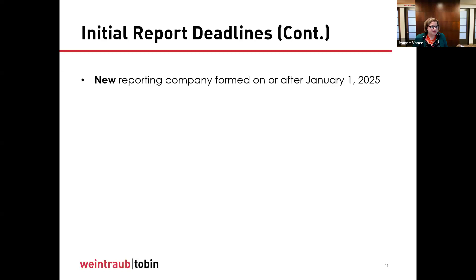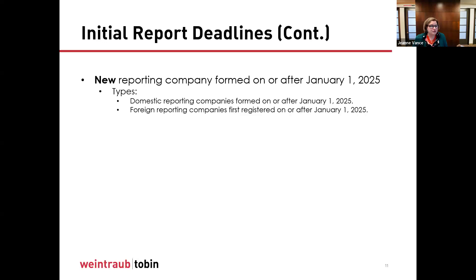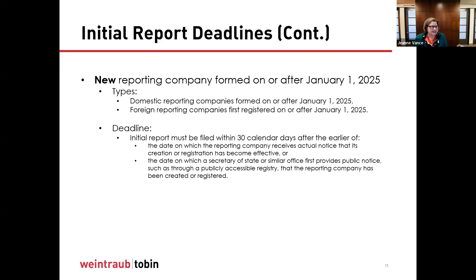If there is a new reporting company formed on or after January 1st, 2025, either foreign or domestic, the deadline is 30 days after the triggering date — when the company receives notice that it has been formed, or when public or personal information from the Secretary of State confirms that registration or formation has been accomplished. So you have one set of deadlines for companies formed prior to January 1st, 2024. For this one calendar year they're giving people 90 days to comply, knowing this is a new requirement. After this year, you have only the 30-day period to get the FinCEN reports filed.